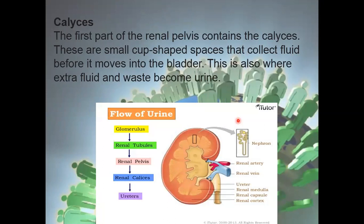The urine follows this pathway: glomerulus → renal tubules → renal pelvis → renal calyces → ureters. The ureters collect urine from the renal pelvis, and this pair of ureters then releases the urine into the muscular sac called the urinary bladder.